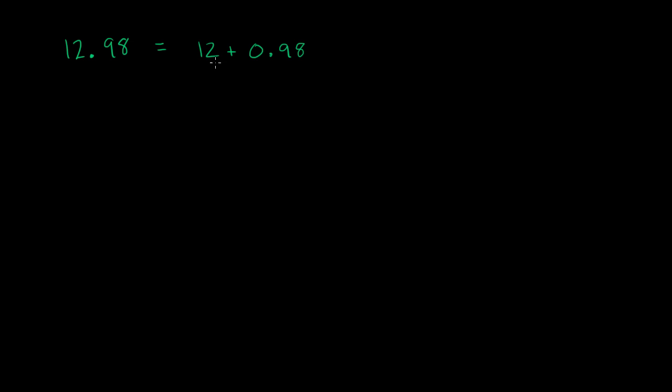And this simplifies it because then we just have to write it as 12 and some fraction that's the same thing as 0.98. So if we can write 0.98 as a fraction, then we're essentially almost done.